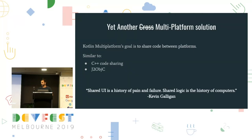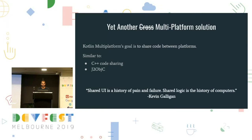It's more similar to C++, where you would share code. There are a lot of companies that have used C++ to share code. Java to Objective-C is another example used in Inbox — the Gmail equivalent. There's a quote from Kevin Galligan, somebody who's really pushing Kotlin Multiplatform: "The shared UI is a history of pain and failure, but shared logic is the history of computers." Java is a great example — the JVM got really popular, but Java's UI frameworks like Swing and AWT — nobody uses them. Everybody uses Java just to share and reuse code.